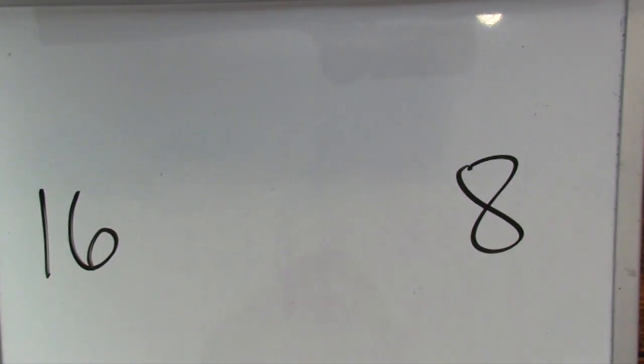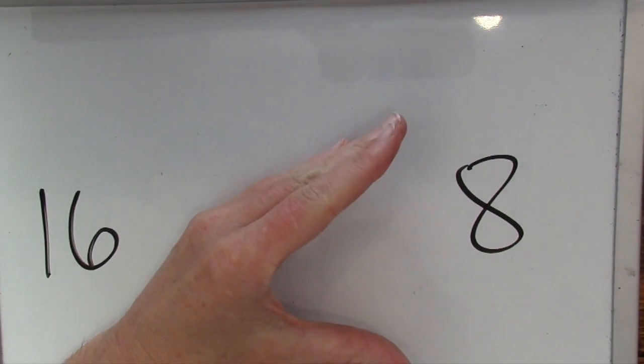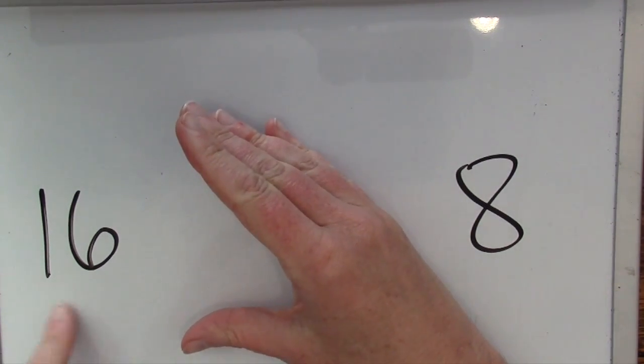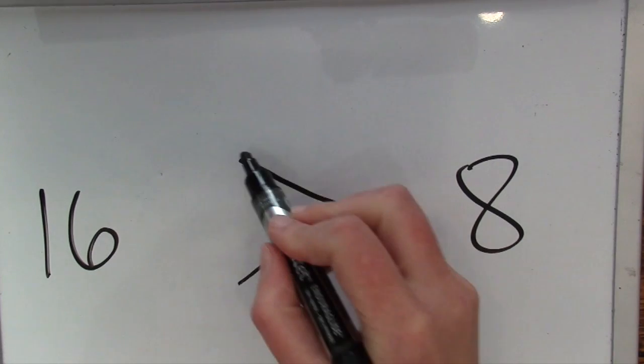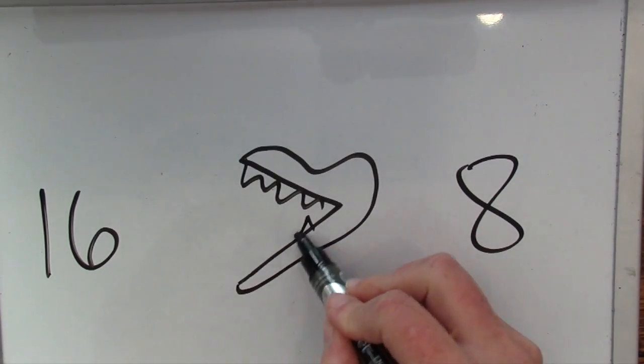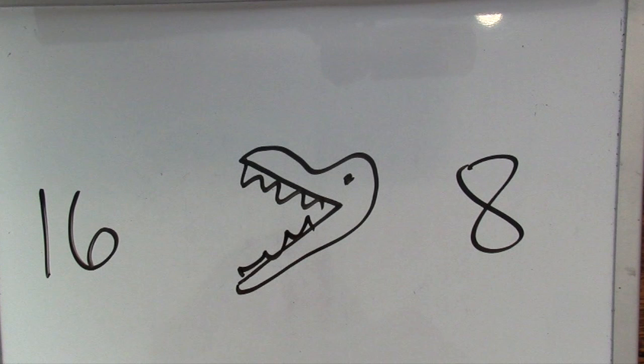Okay, we'll have 16 and 8. Which one is bigger, 8 or 16? 16 is the bigger number, so Greater Gator's mouth faces in the direction of 16. The bigger part faces 16.